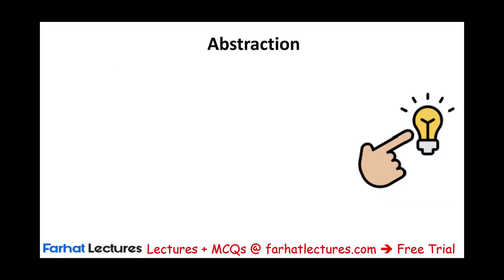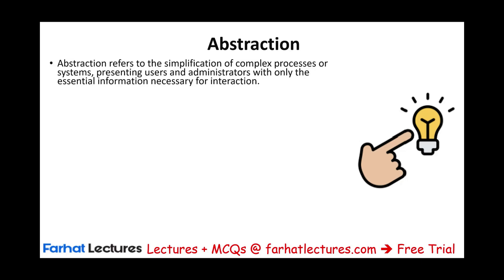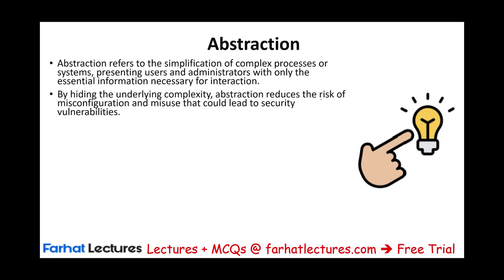Abstraction refers to the simplification of a complex process or system, allowing users or administrators only the essential information necessary for interaction. A system could be very complex — what you need to do is hide that complexity so users can only click a button or turn a light on, without seeing what's going on behind the scenes. By hiding the underlying complexity, abstraction reduces the risk of misconfiguration. If users have access to too much information or too much of the system, they could misconfigure it or misuse it — for example, changing the websites they can access. You prevent them from doing so without showing them how.